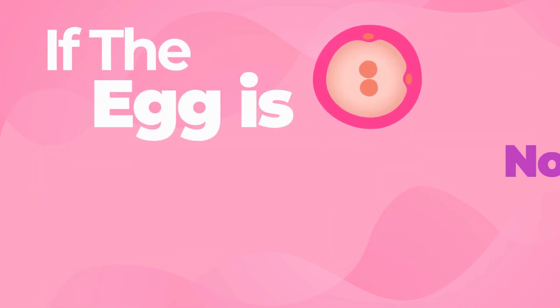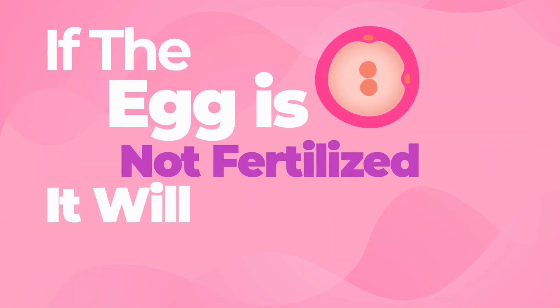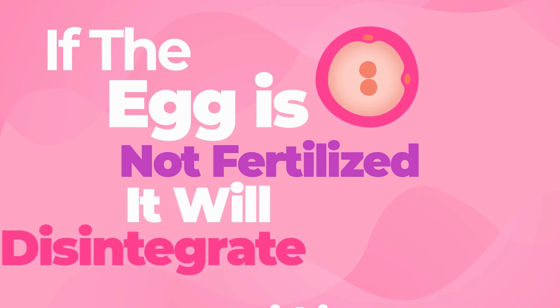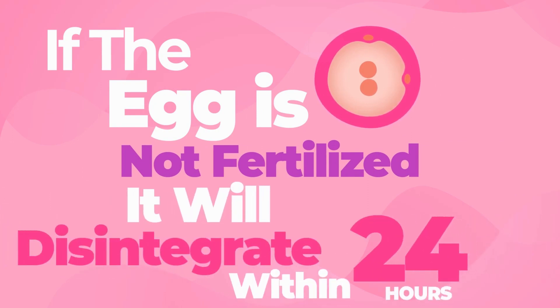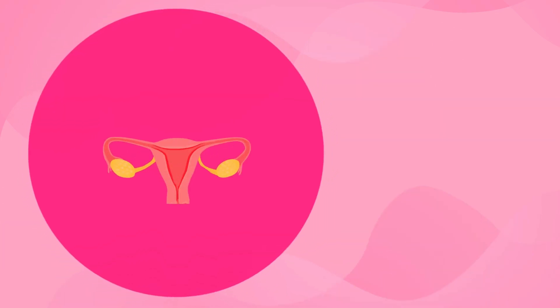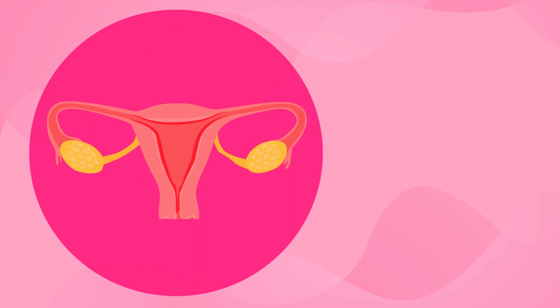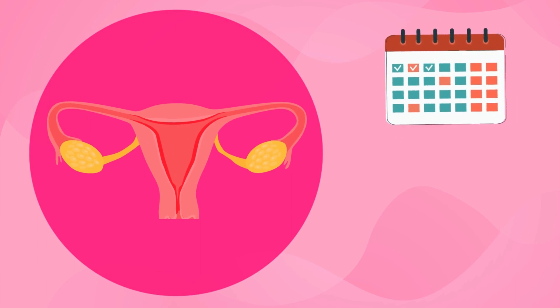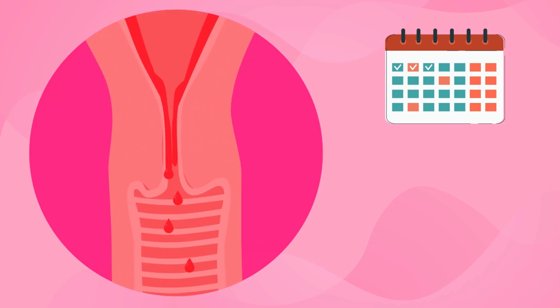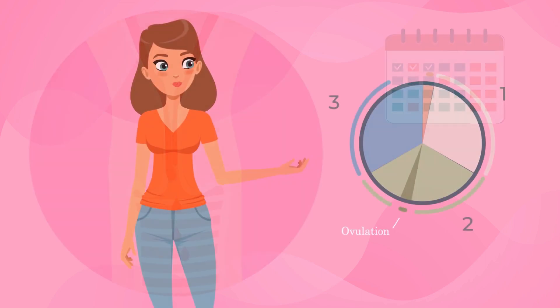If the egg is not fertilized, it will disintegrate within 24 hours. If a fertilized egg does not implant in the endometrium, progesterone levels decline after about two weeks. This results in the endometrium shedding, which you recognize as menstrual flow. And the whole cycle starts again.